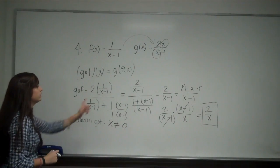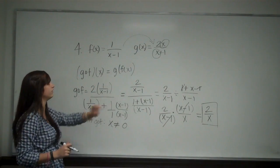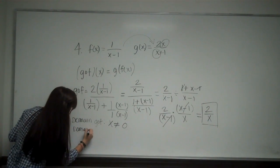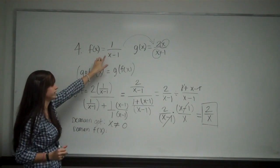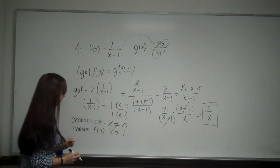Now I also have to consider the domain of f of x, because that is what I plugged into the g of x. So the domain of f of x is going to be when x cannot be 1, because when x is 1, my denominator is 0.